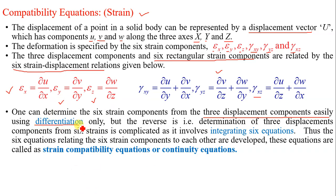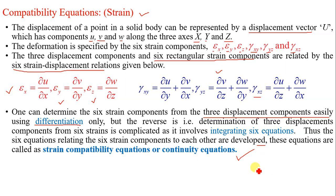However, if the reverse is asked — finding 3 displacement components from 6 strain components — the problem becomes complicated, as it involves integrating 6 equations. Therefore, 6 equations relating the 6 strain components to each other are developed, and these are called strain compatibility equations or continuity equations.